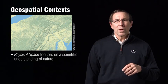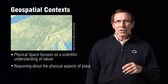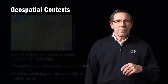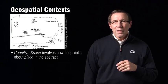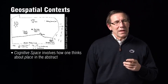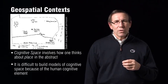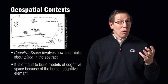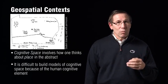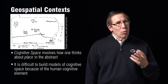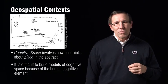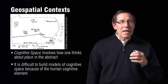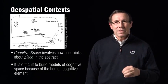Physical space focuses on the scientific understanding of nature — reasoning about the physical aspects of place. This involves understanding and models of the way nature works. Cognitive space involves how one thinks about place in an abstract way. An example is how one prefers one place over another; it's difficult to build models about this because it's in someone's mind. The example shown here is a student drawing of Penn State — a map of Pennsylvania with University Park on it. Off to the right-hand side, you'll see X's representing the state of New Jersey, labeled as a wasteland. This shows what the individual thought of that space.